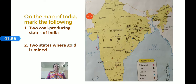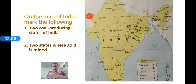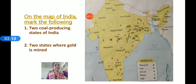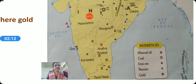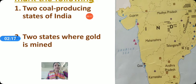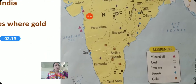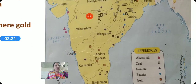On the map of India, mark the following. First, what is written? Two coal-produced states of India. First, look at this map on page number 119. In this map you have all the references below. First: coal. The coal symbol is four black dots.